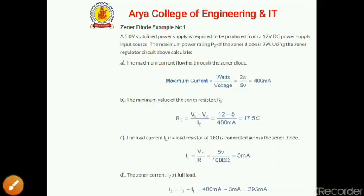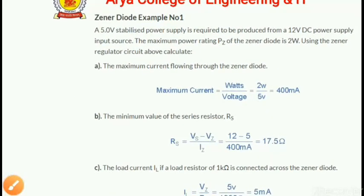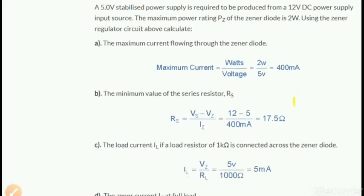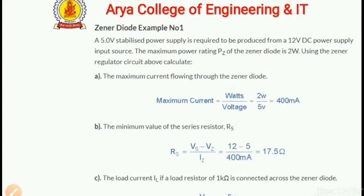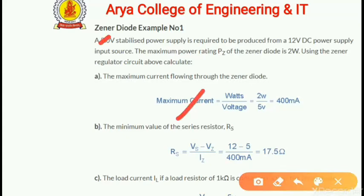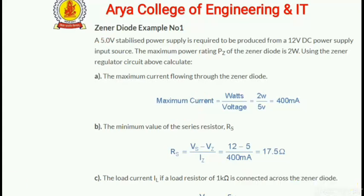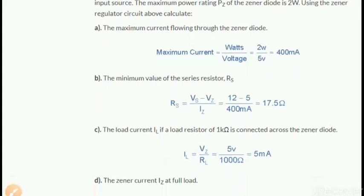Now we have a numerical example of Zener diode: a 5.0 volt stabilized power supply is required from a 12 volt DC power supply. The maximum power rating PZ of the Zener diode is 2 watts. We can calculate the maximum current as P/V = 2W / 5V = 400 milliamperes.